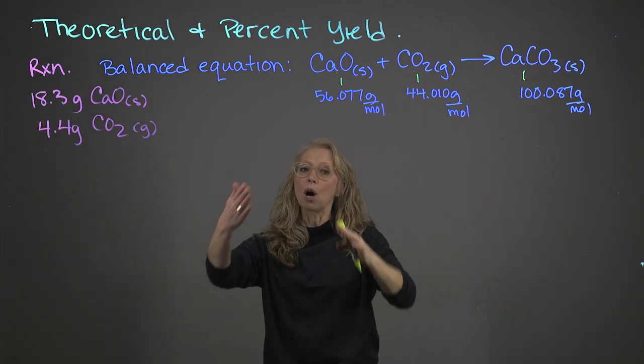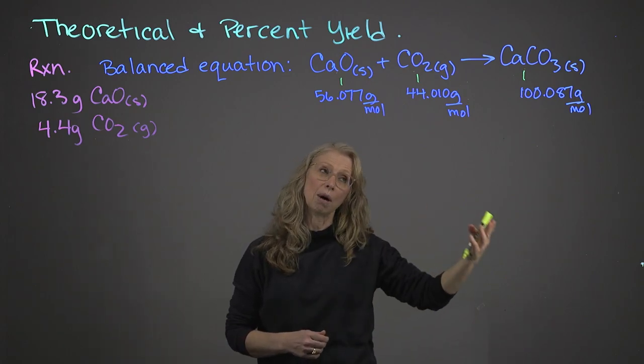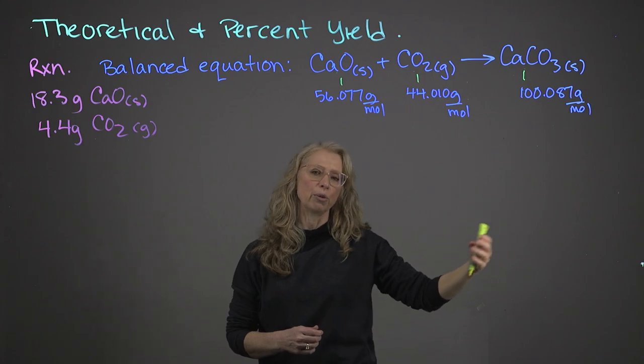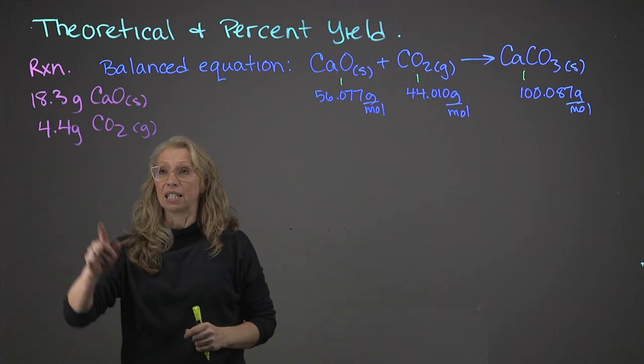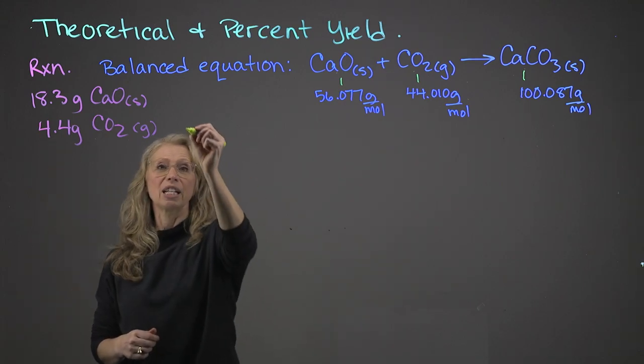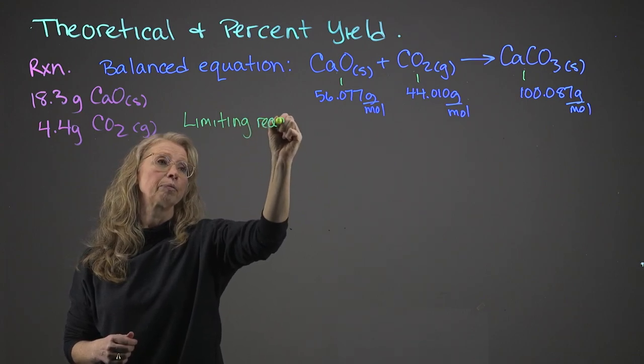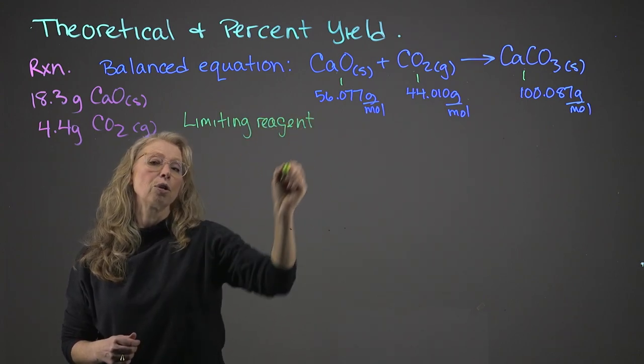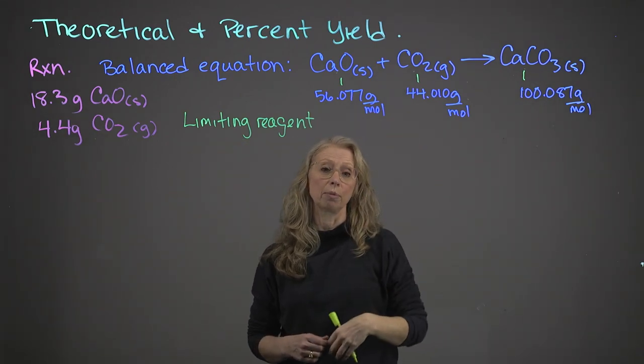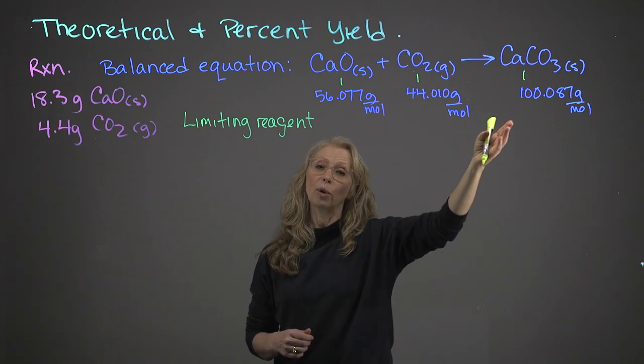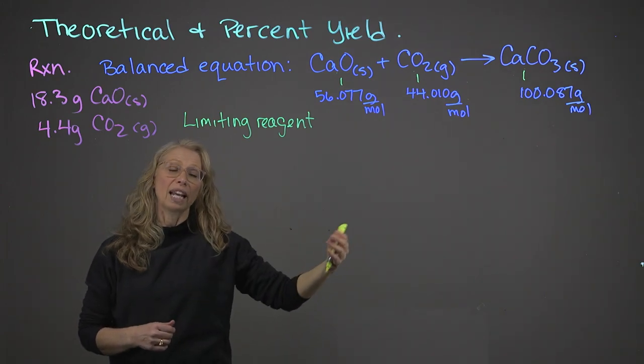So with all of this information, we can calculate our theoretical yield, how much we theoretically could make. Now, the very first step is determining what your limiting reagent is. So if we don't have exactly one mole of calcium oxide and one mole of carbon dioxide, we won't get exactly one mole of calcium carbonate. So what can we get?